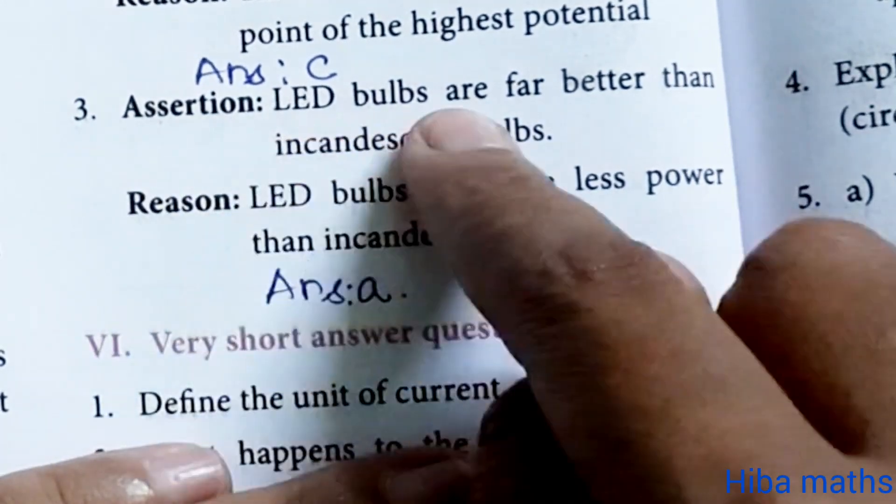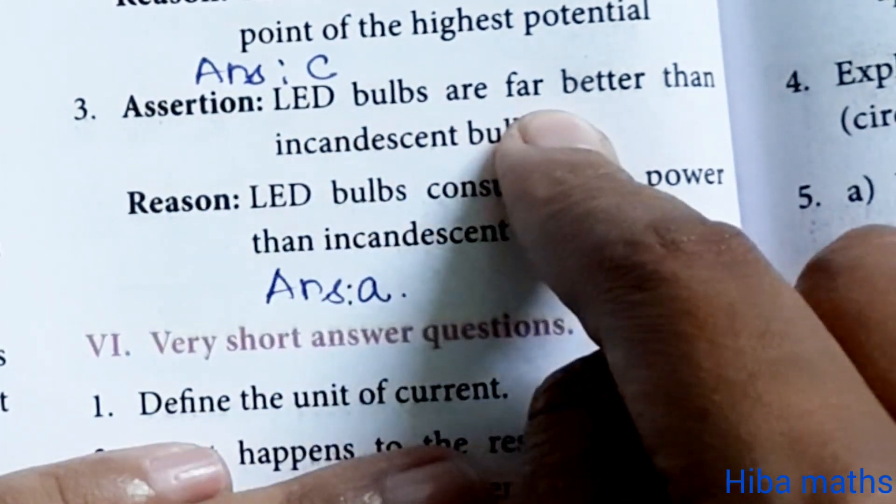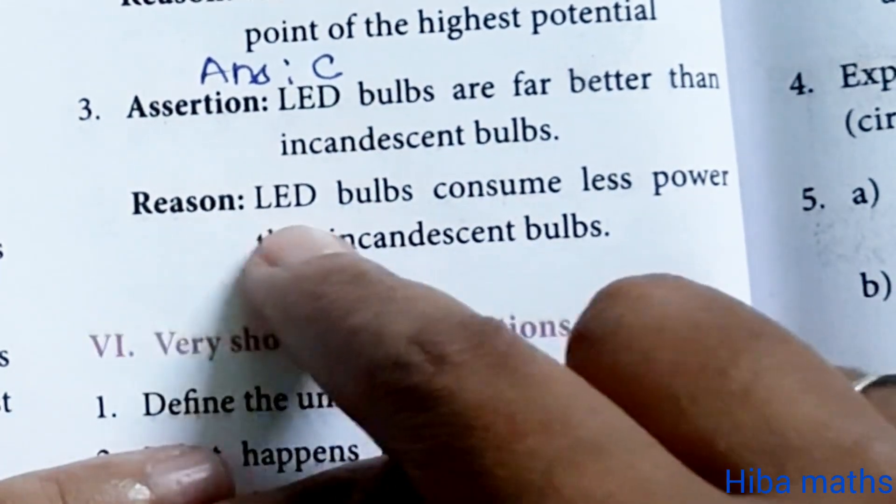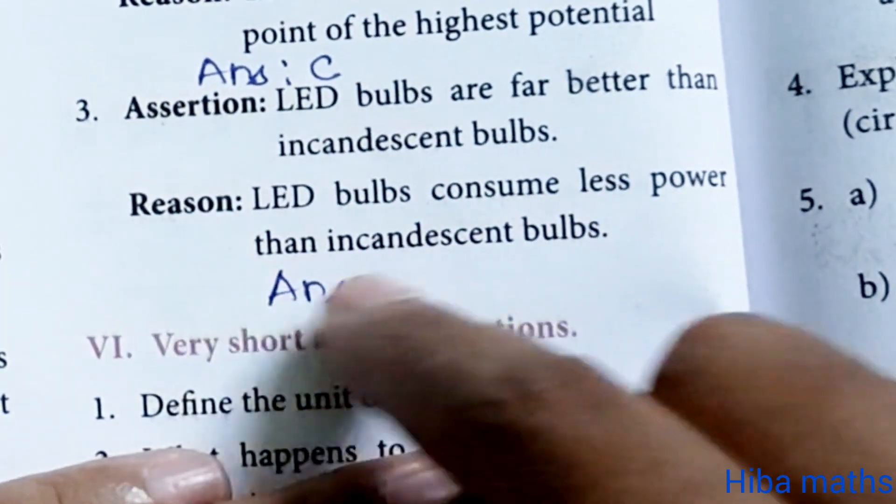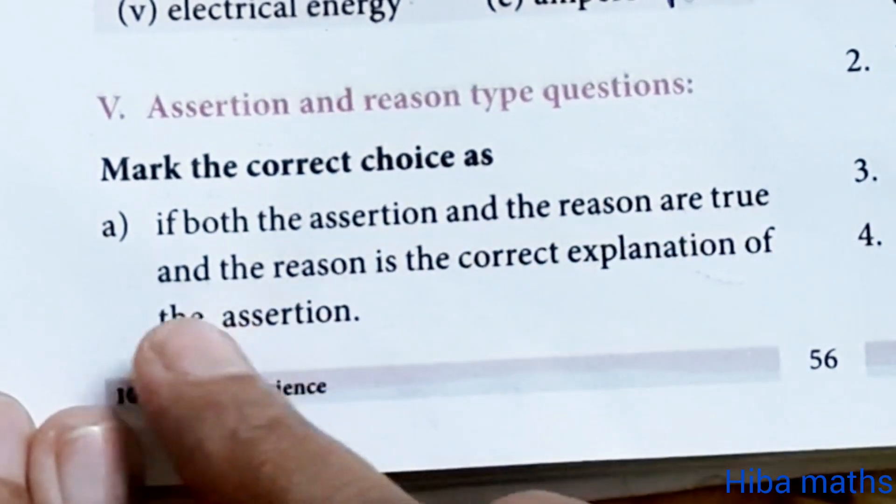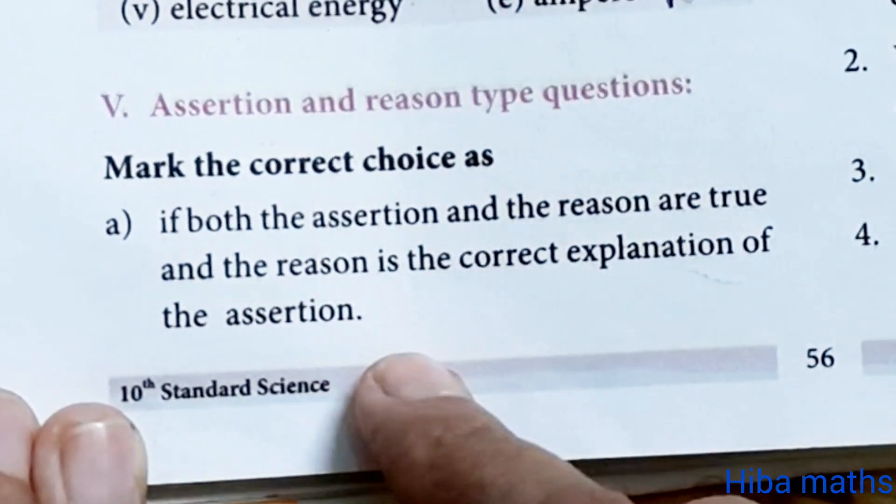Third question, assertion: LED bulbs are far better than incandescent bulbs. Reason: LED bulbs consume less power than incandescent bulbs. Answer is A. If both the assertion and reason are true, and the reason is the correct explanation of the assertion.